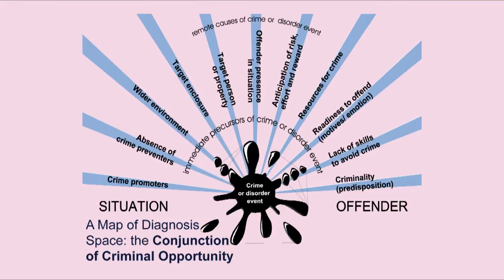Defender presence in the situation at about 12 o'clock. Target: personal property — vulnerable, attractive, provocative. Enclosures: if the target is the crown jewels, the enclosure could be a safe, a locked room, a building or a compound like a car park — the Tower of London. Wider environment could be a train station, a housing estate, or a shopping centre — two aspects to it.